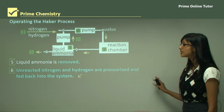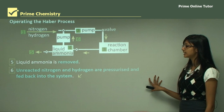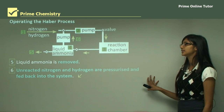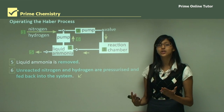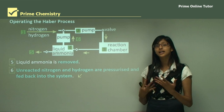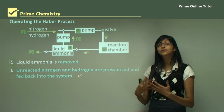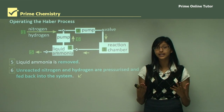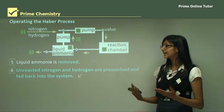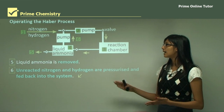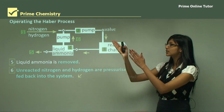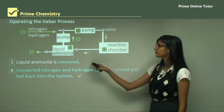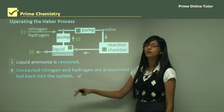Unreacted nitrogen and hydrogen are pressurized and fed back into the system. We need to ensure that all reactants are converted to ammonia and nothing goes to waste. Therefore, anything unreacted is sent back through the whole process to form more ammonia.